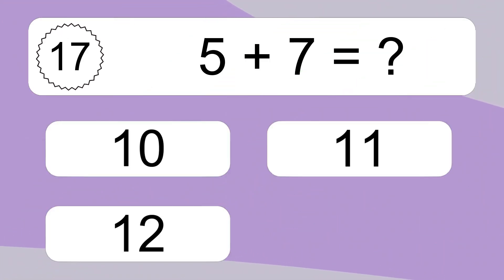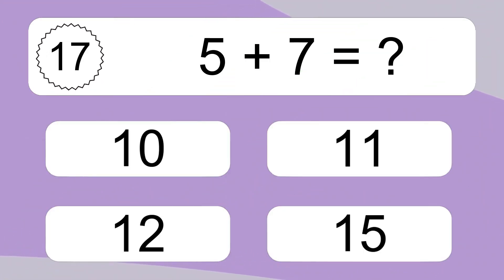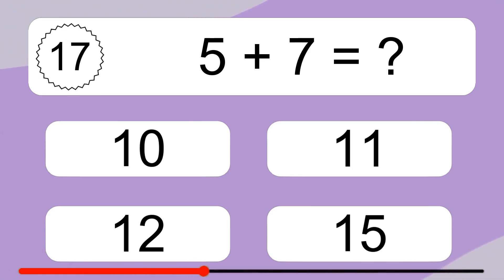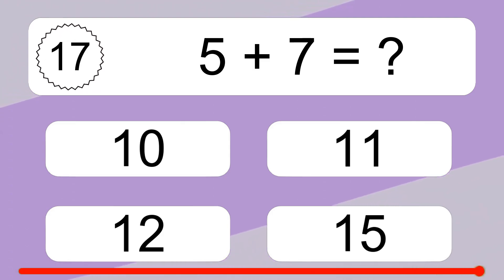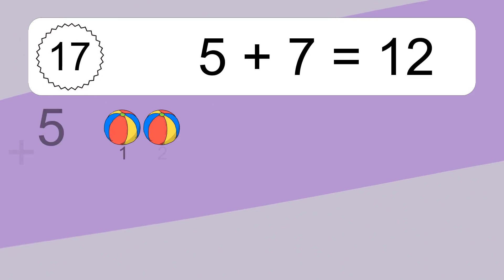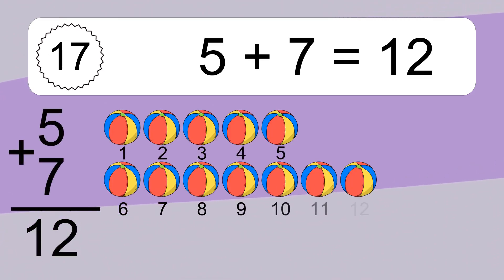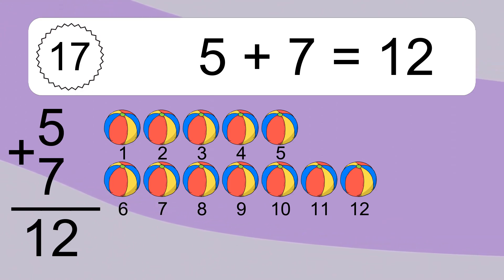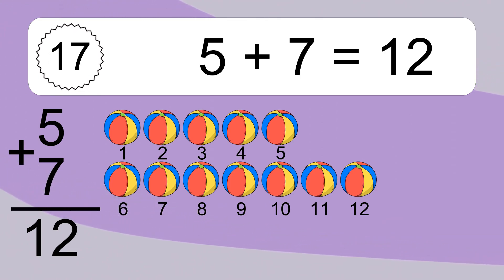Five plus seven equals what? Five plus seven equals twelve. Let's count it: one, two, three, four, five, six, seven, eight, nine, ten, eleven, twelve.